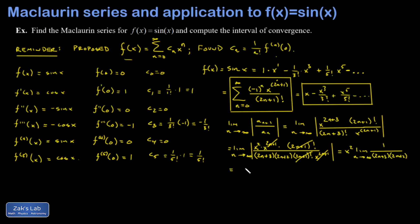And that limit unambiguously goes to 0. So I end up with an x squared times 0 or just 0. And this is certainly less than 1, no matter what value of x I choose. And so I can say the series converges for all real values of x. Equivalently, I could say the interval of convergence is negative infinity to infinity.